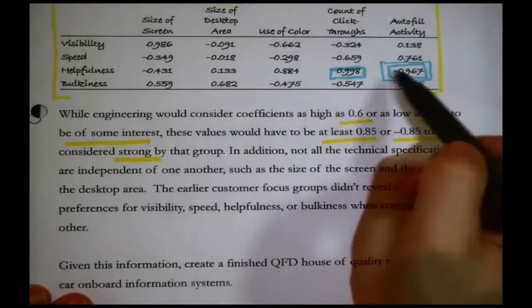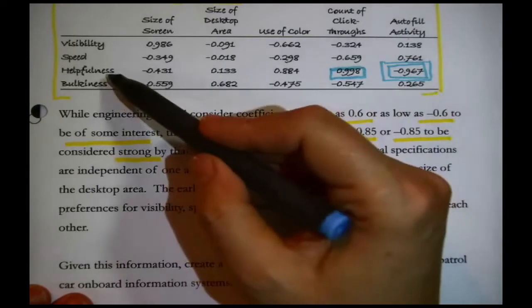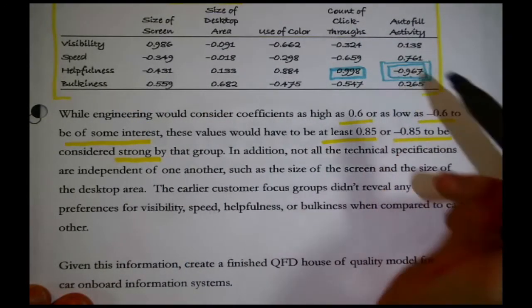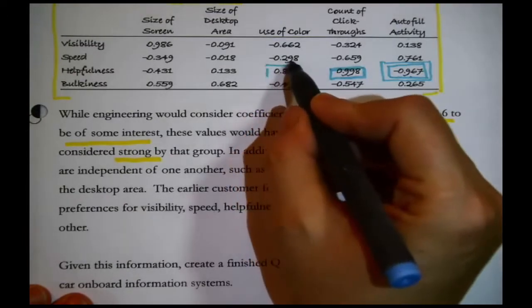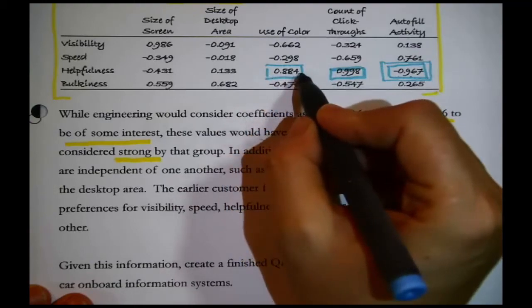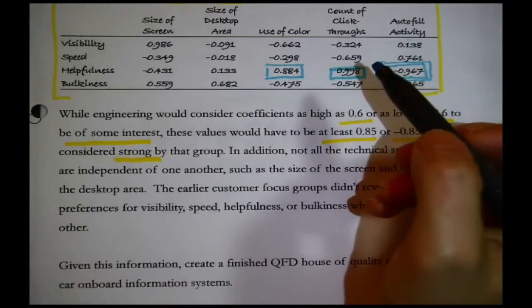What is it? It's the relationship between helpfulness and autofill activity. So apparently, the more autofill activity, the less helpful the system is perceived, because the negative value tells us they work in opposite directions. Another one that qualifies as strong is over here, because it's above 0.85, between helpfulness and use of color.